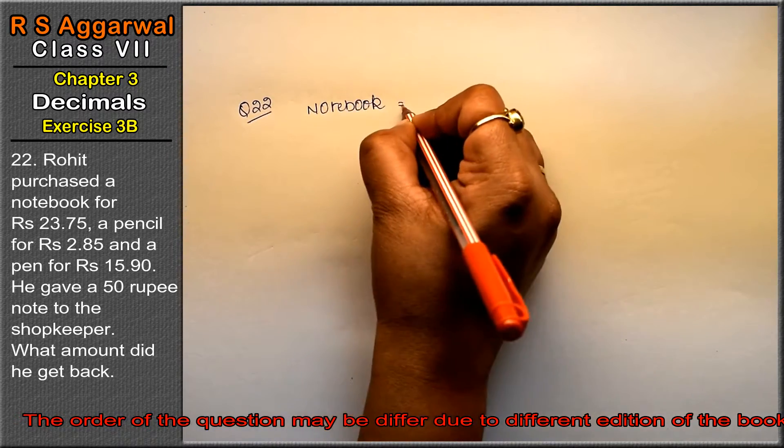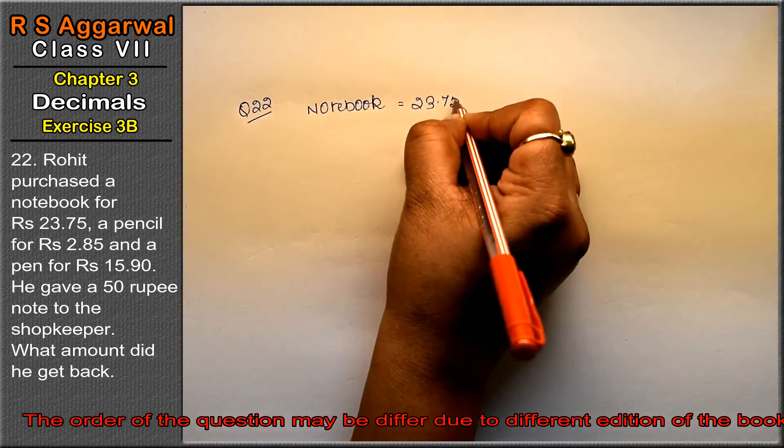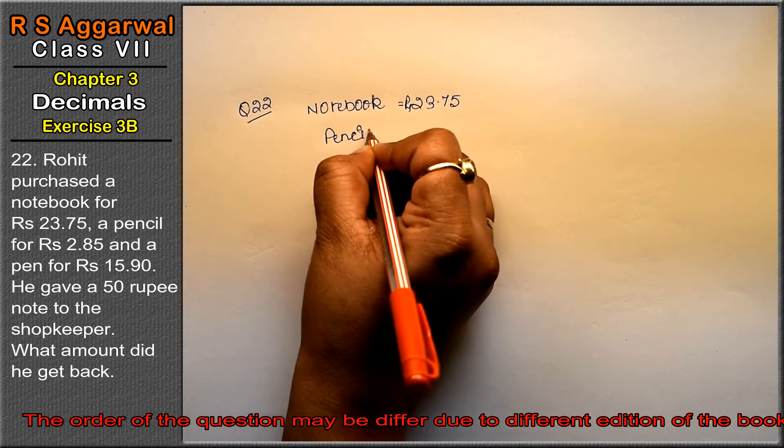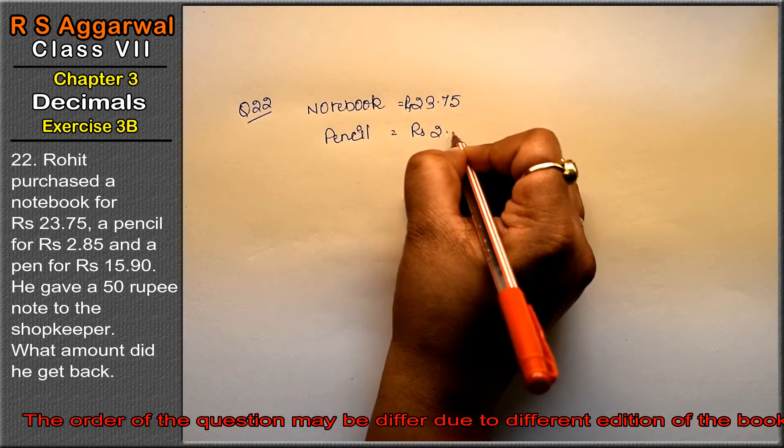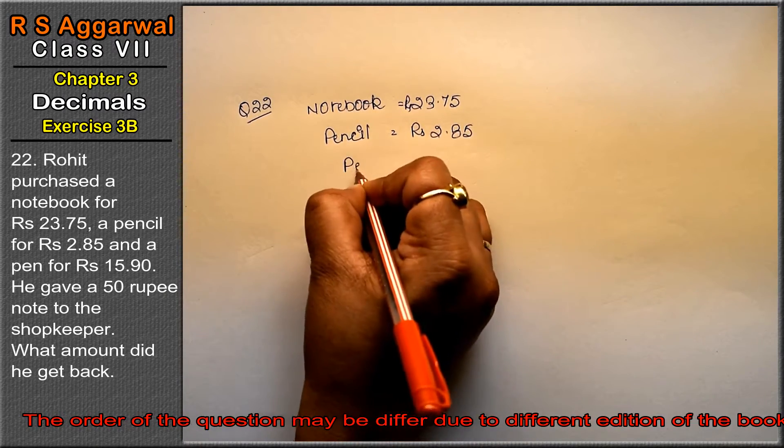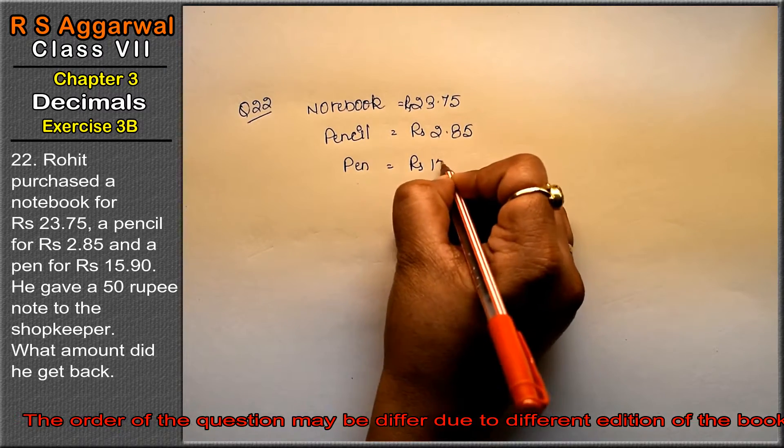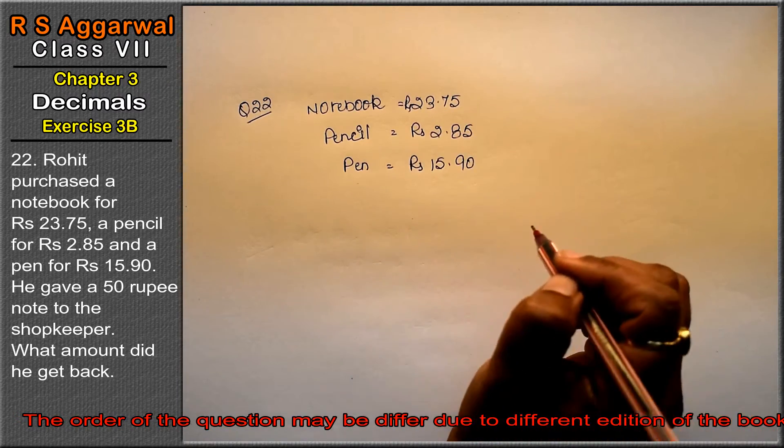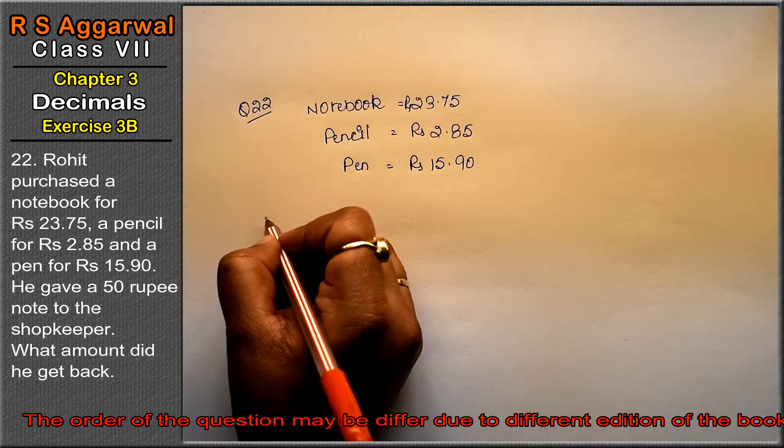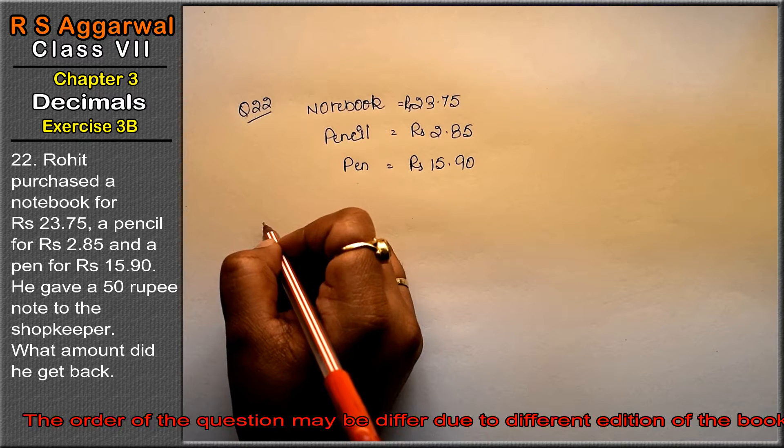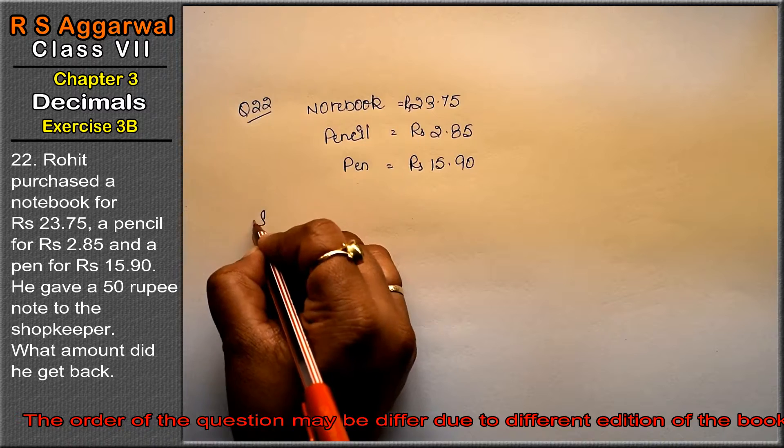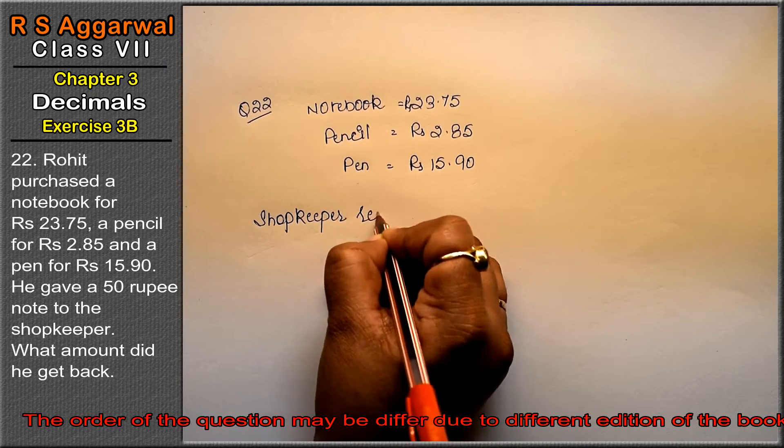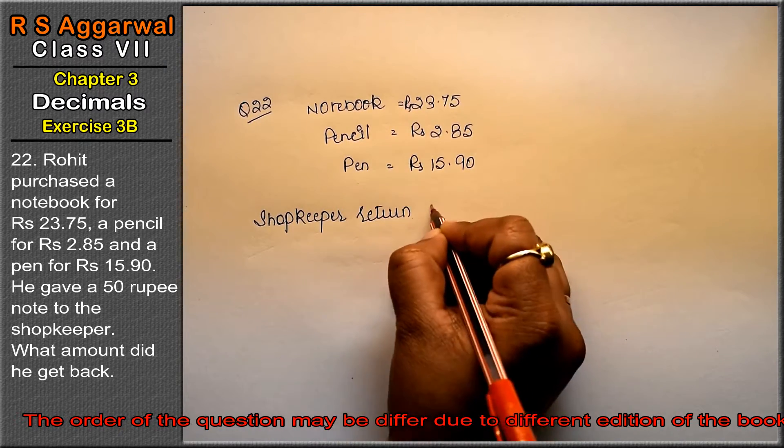Notebook equals Rs. 23.75. Pencil came Rs. 2.85, and pen came Rs. 15.90. Now how much did he fulfill this total? How much did he return? The total we gave him, minus himself. So shopkeeper returned to Rohit